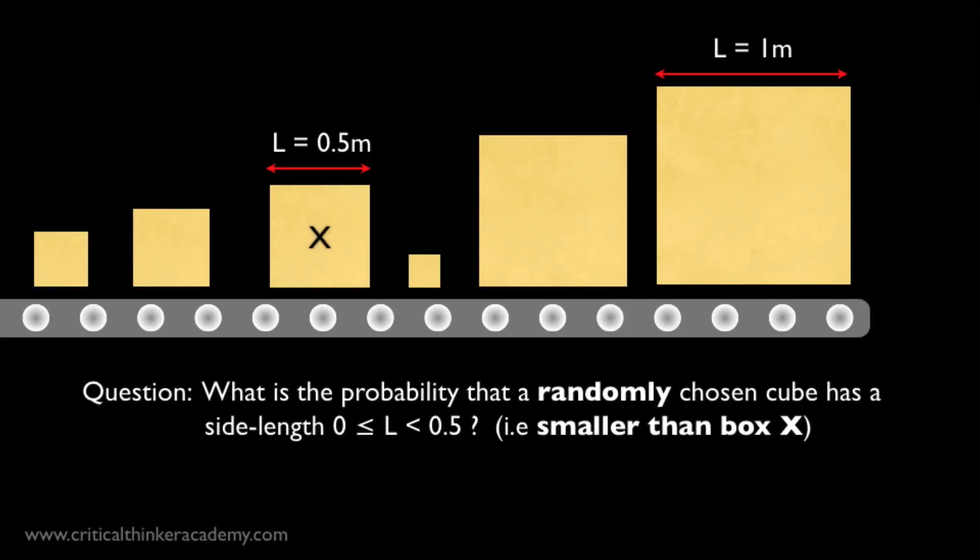Here's a well-known example from the literature that illustrates the problem. Suppose a factory produces cubes with a side length between 0 and 1 meter. We don't know anything about the production process. Question. What is the probability that a randomly chosen cube has a side length between 0 and half a meter? In other words, what is the probability that a randomly chosen cube is smaller than that box X right there?